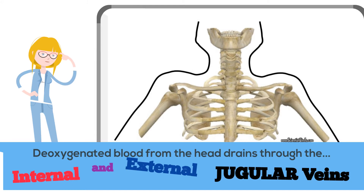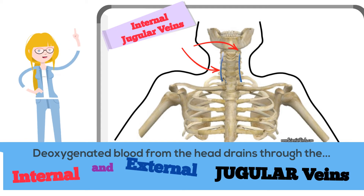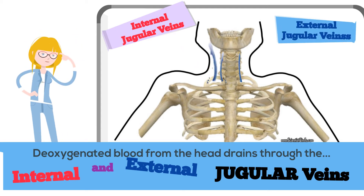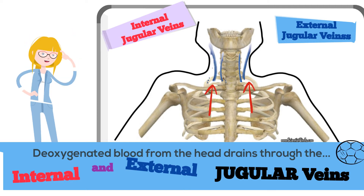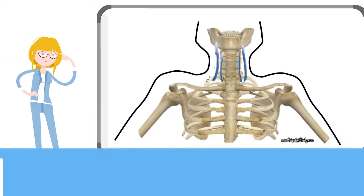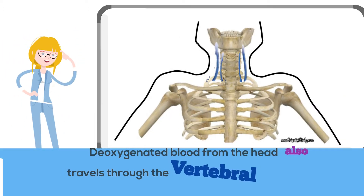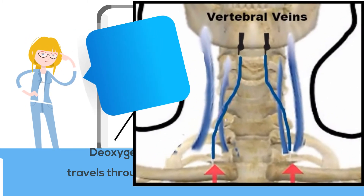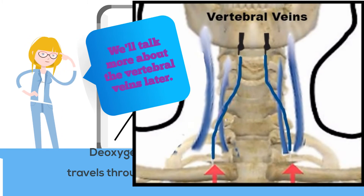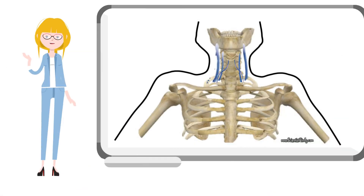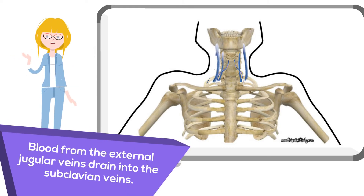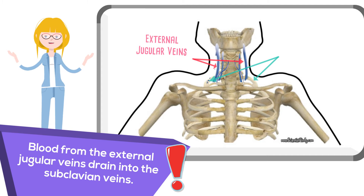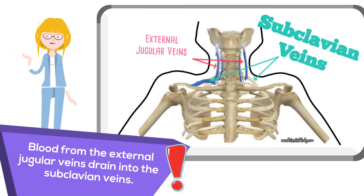Deoxygenated blood from the head drains through the internal and external jugular veins. Deoxygenated blood from the head also travels through the vertebral veins — we'll talk more about those later. Blood from the external jugular veins drains into the subclavian veins.